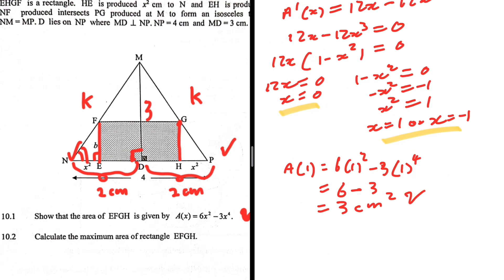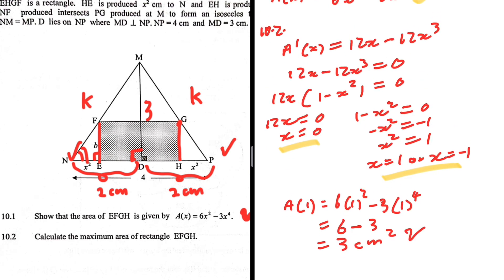Between the critical values, x = 0 gives area = 0 and x = 1 (or x = -1) gives area = 3 cm². So the maximum area is 3 cm². I think this was a very interesting question, especially 10.1. Let me know which video I should do next in the comments.